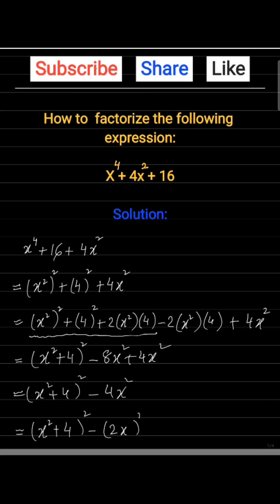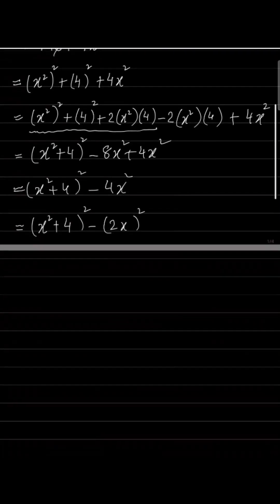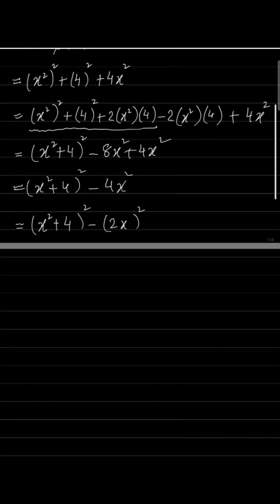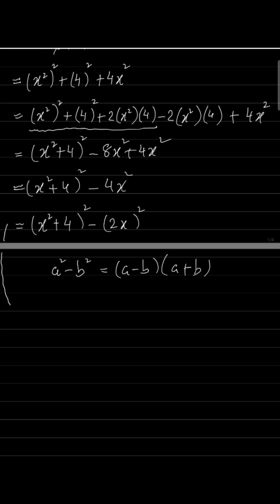Here we can apply the formula a² - b² = (a - b)(a + b). So we will write the expression as (x² + 4) minus 2x...